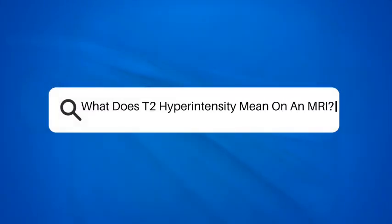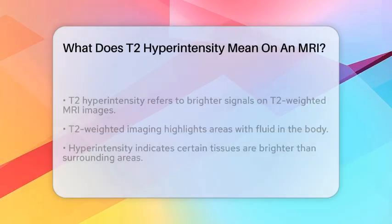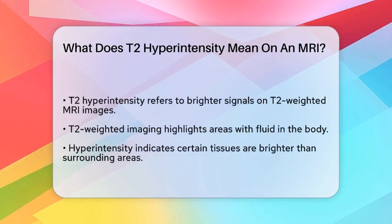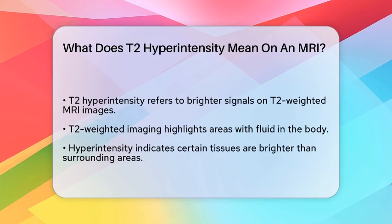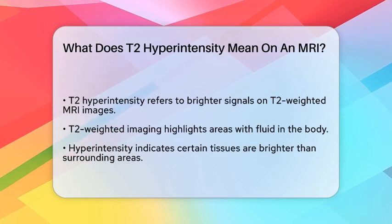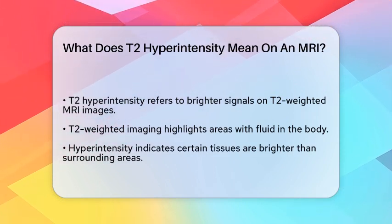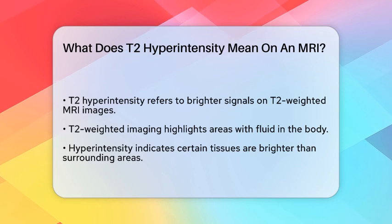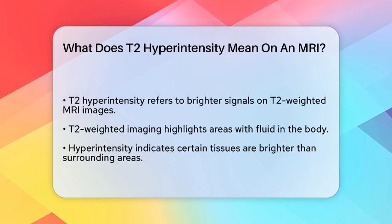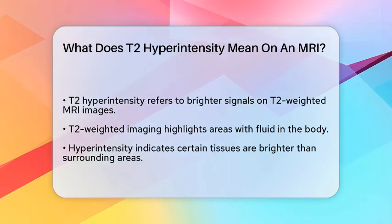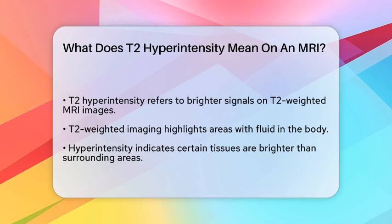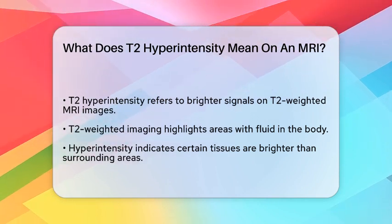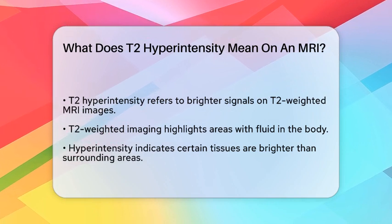What does T2 hyperintensity mean on an MRI? Imagine you are looking at a photograph of a beautiful landscape, but some areas appear brighter than others. This difference in brightness can tell you a lot about what is happening in that scene. Similarly, in medical imaging, particularly magnetic resonance imaging, brightness variations can indicate different conditions within the body.